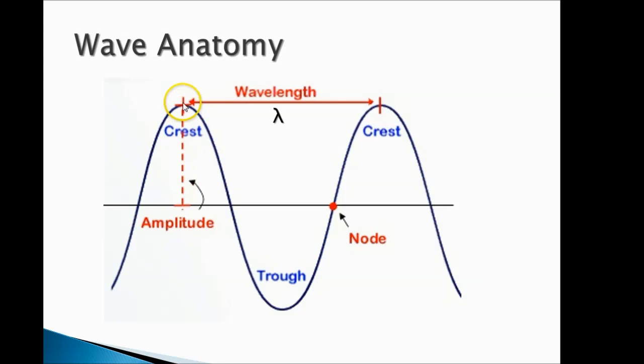The amplitude of a wave is defined as the highest point or the lowest point that the wave will get from the resting position. So the amplitude can be the height of the crest or it can be measured as the depth of the trough.